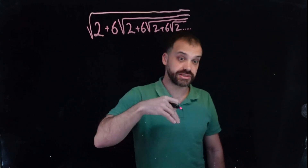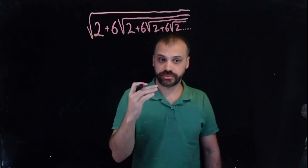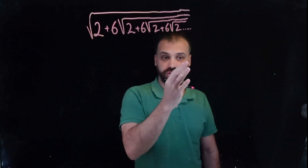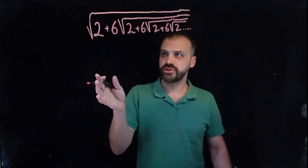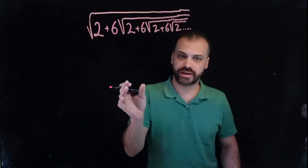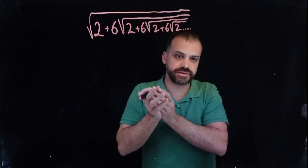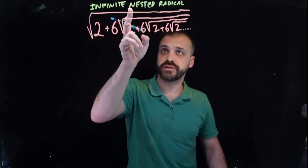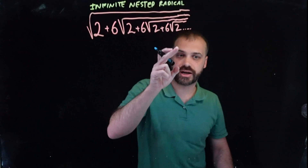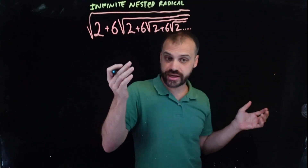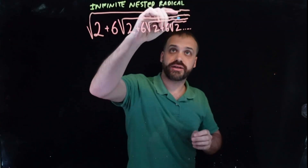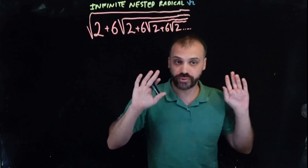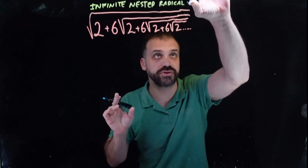Just imagine: plus 6 times the square root of 2 plus 6 times the square root of 2, but forever — forever and ever and ever. It would seem like you couldn't simplify this, but you can. It's really cool. The word for this is an infinite nested radical: infinite means it goes on forever, nested means inside each other, and radical is just another word for a square root sign.